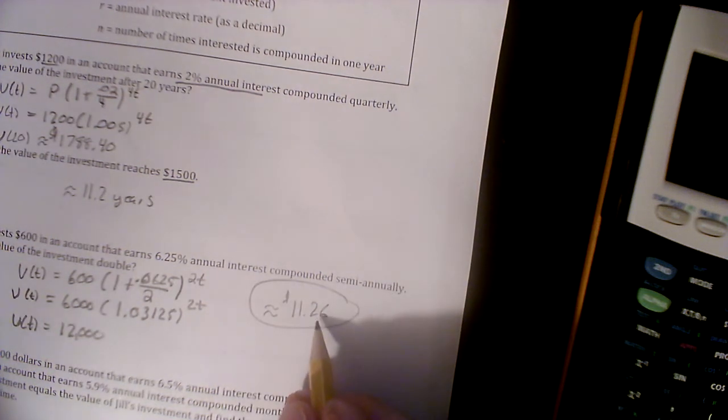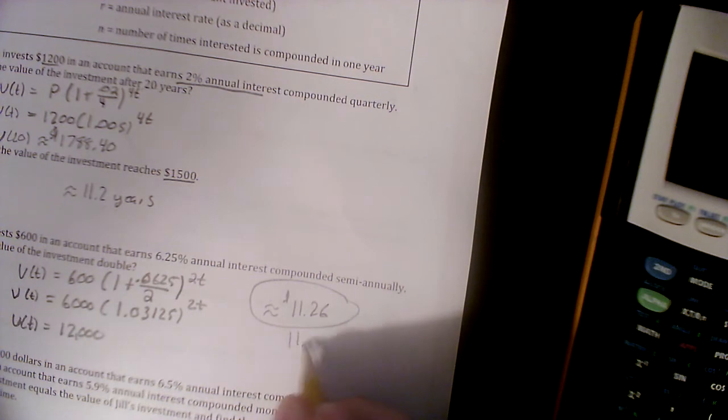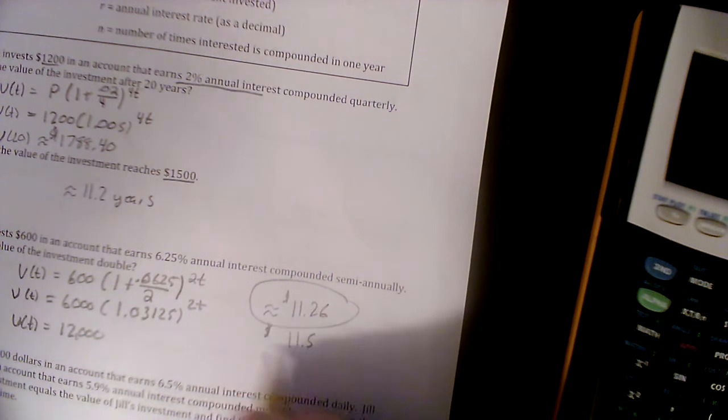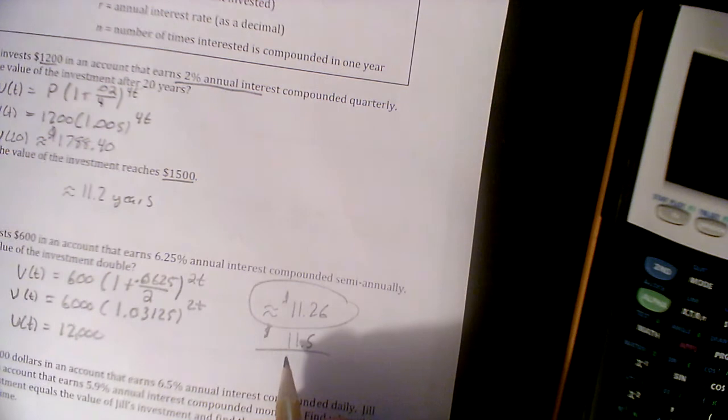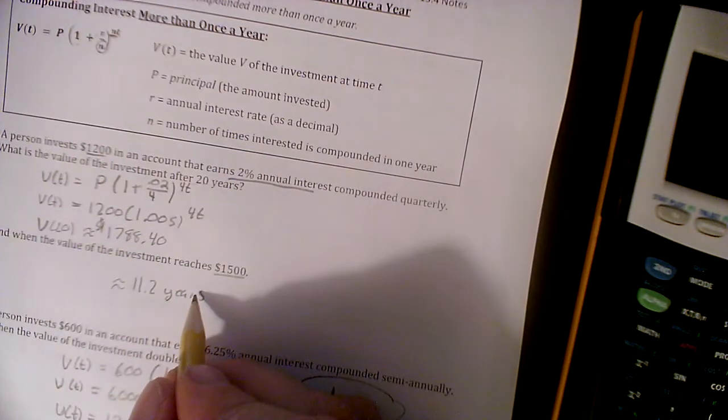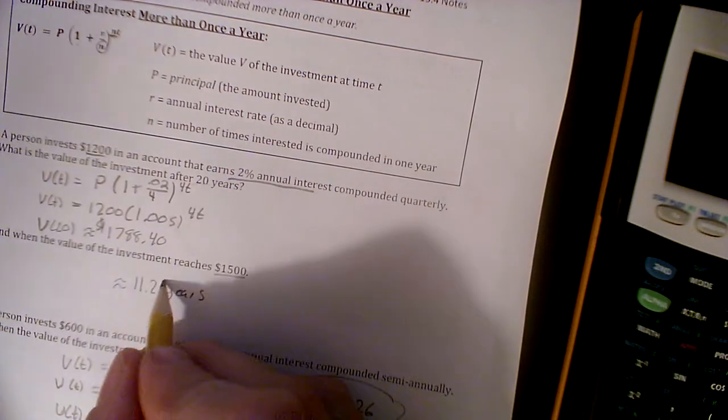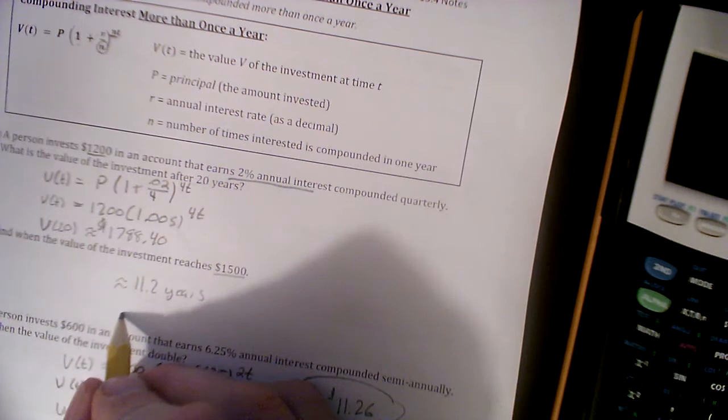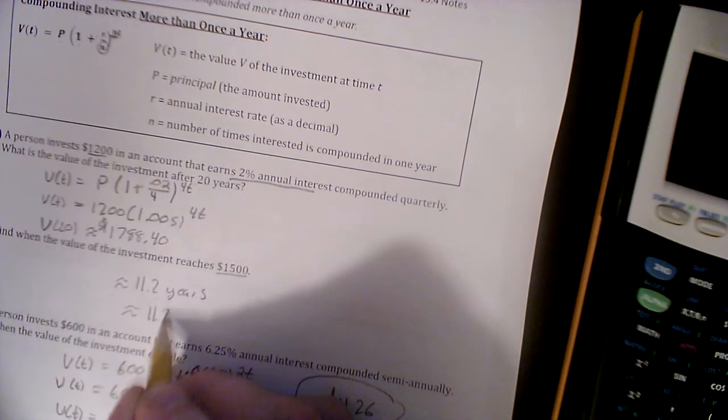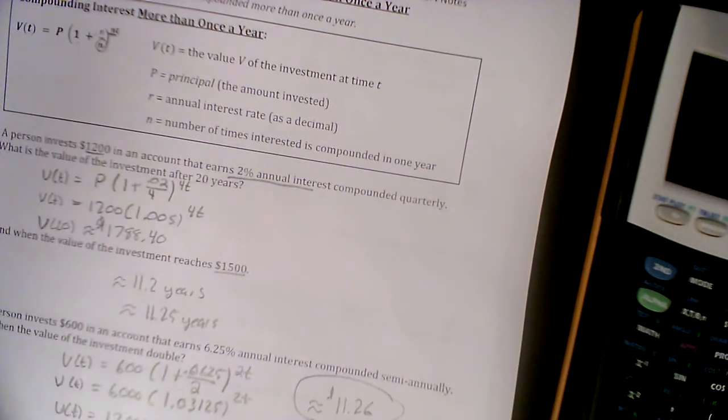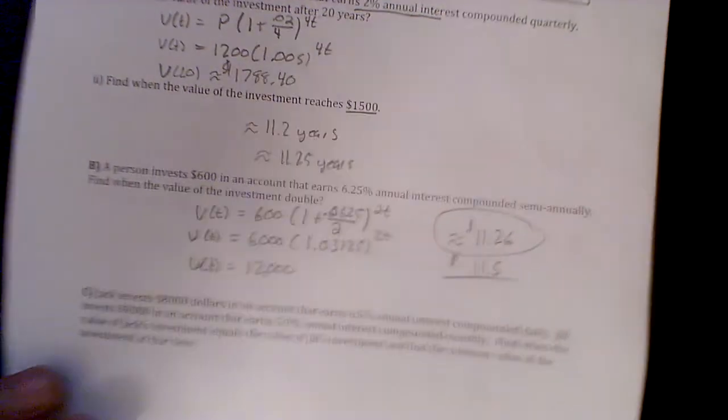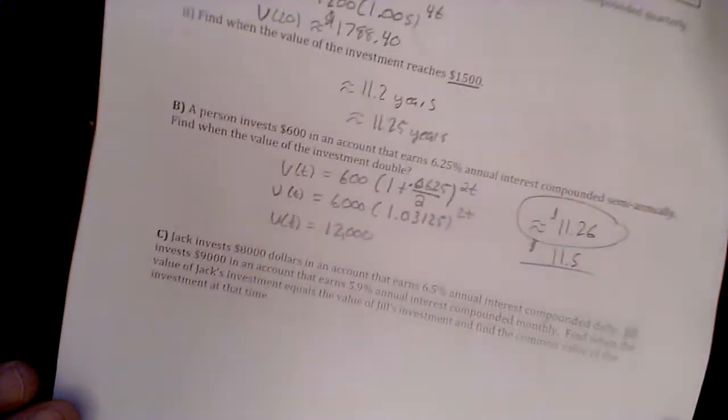So approximately 11.26. Now we could argue this amount right here because it's only semi-annual, so there's a chance we might have to round this up to 11.5. I really haven't seen what the book does with this. Quarterly that would be 11.25, right? So we could say approximately 11.25 for quarterly years. I didn't really give that much thought when we were doing this.